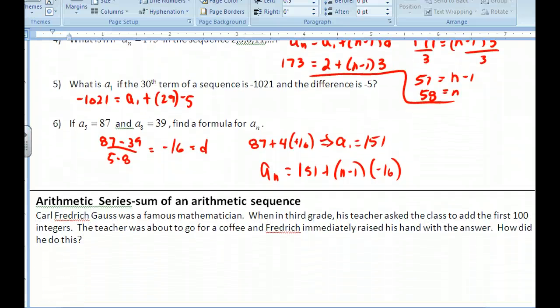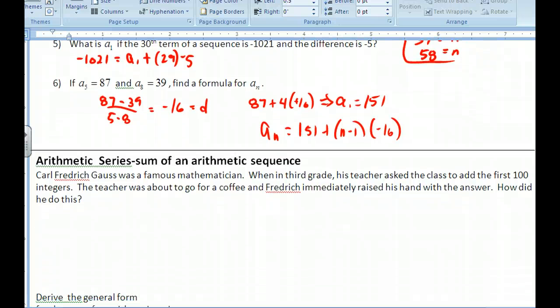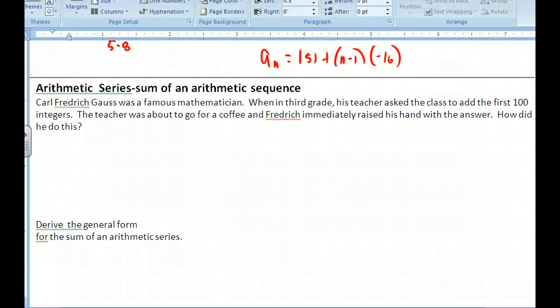So that's applying the arithmetic sequence formulas. Remember, a sequence is a listing of numbers. Now a series is taking that listing of numbers, and you're going to add them all up. And so Carl Frederick Gauss, he was a very famous mathematician, and when he was in the third grade, his teacher asked him to add up the first 100 integers. And then the teacher was about ready to go out for coffee, and all of a sudden, Frederick raised his hand, and the teacher had to stop.